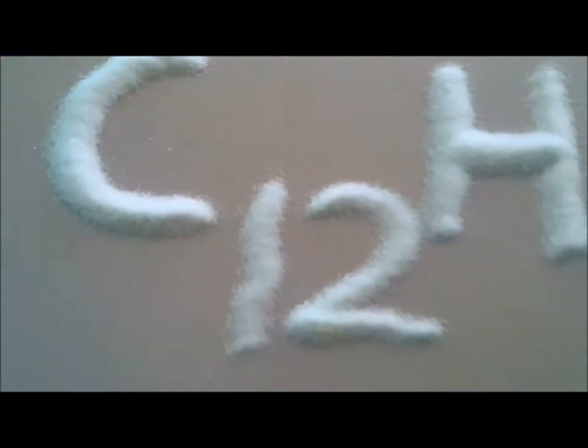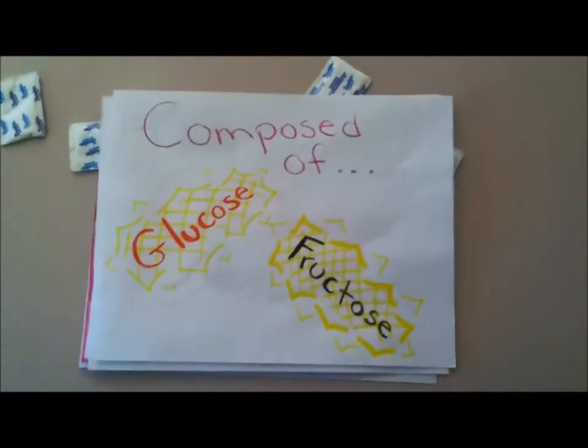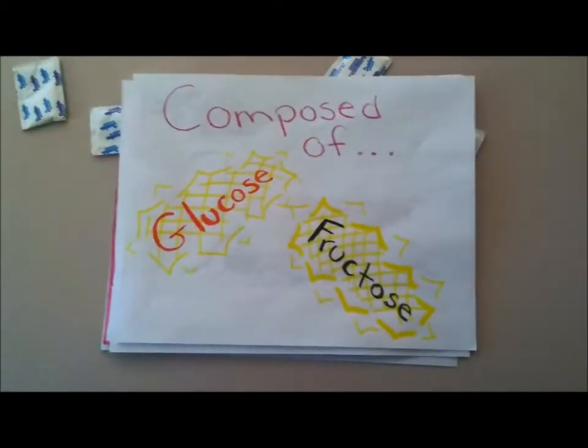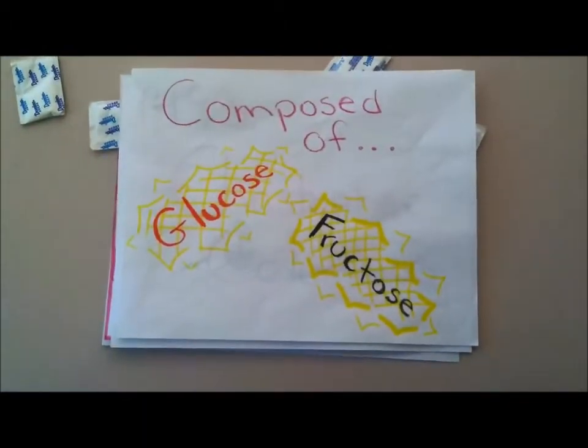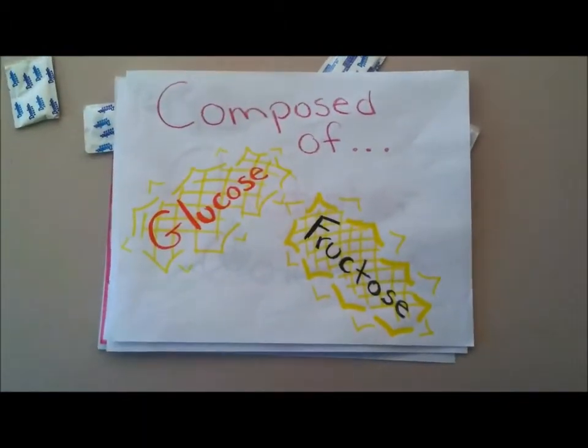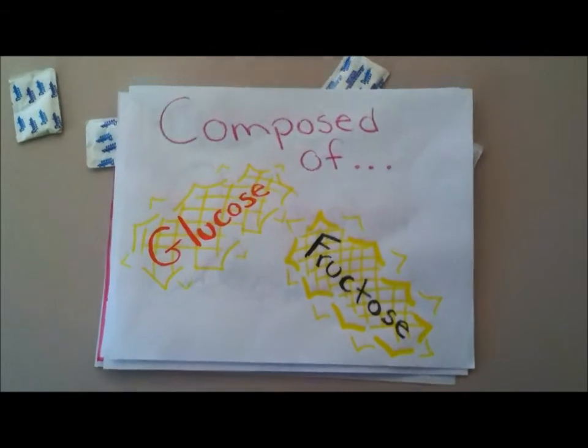The chemical makeup of sugar is 12 carbon, 22 hydrogen, and 11 oxygen atoms. Sucrose is a disaccharide composed of glucose and fructose.